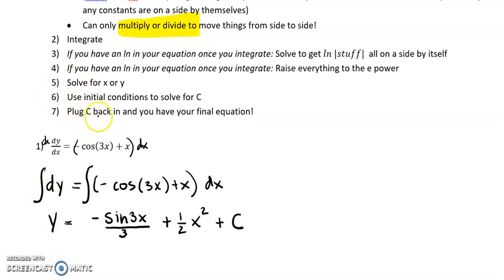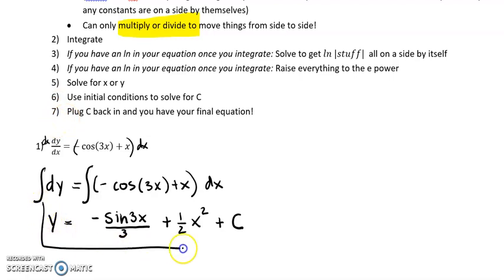Step five is solve for x or y. Well, we already solved for y, so in this case not too shabby. Steps six and seven: use initial conditions to solve for c. We don't have any initial conditions in this case, so we'll skip that step. So we've got our answer.